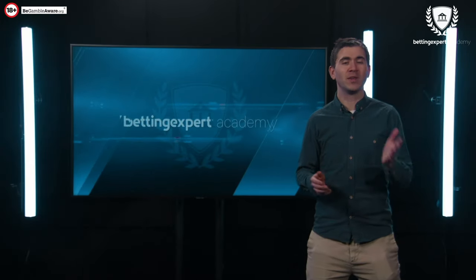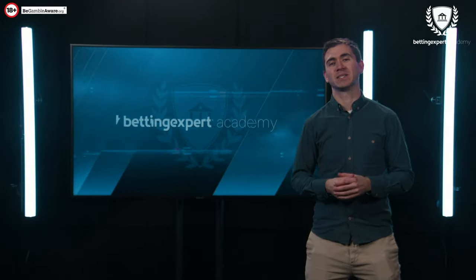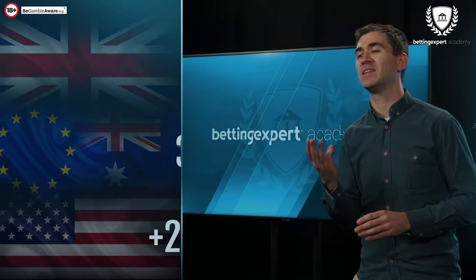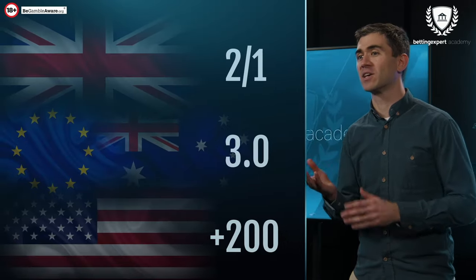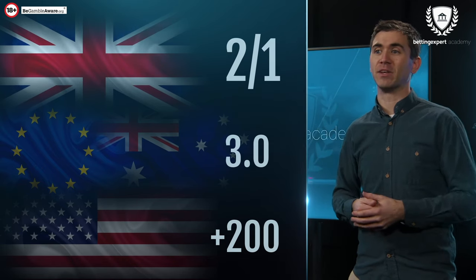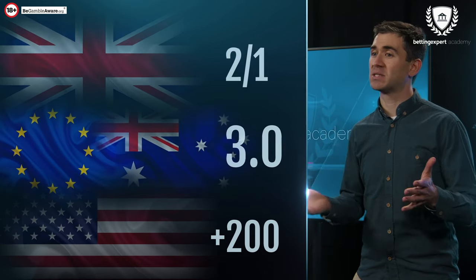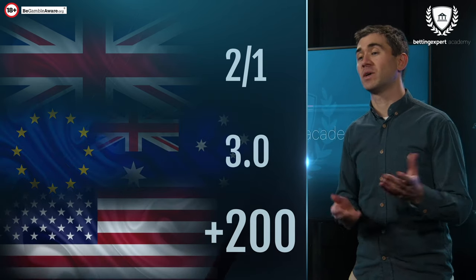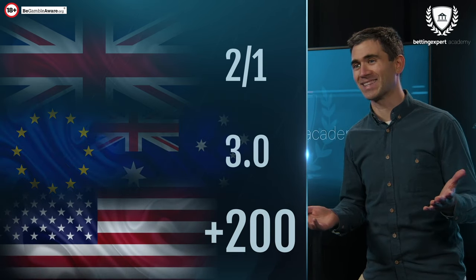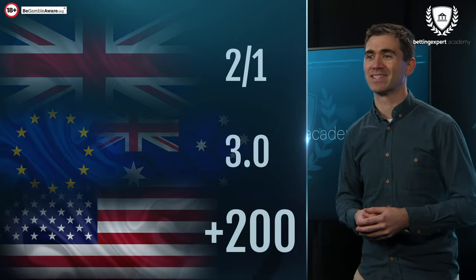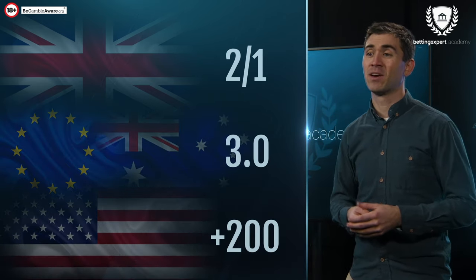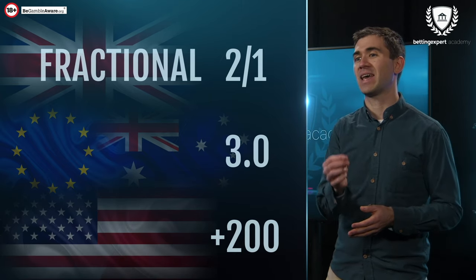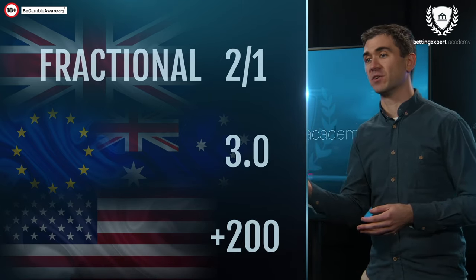To start off with, when you look at a betting market on a bookmaker site, you'll see betting odds in one of three different formats: fractional, which is mostly used in the UK; decimal, which is popular around Europe or Australia; and American odds, which is mainly used in the United States. Fractional odds show you an amount that you could win and the amount you need to stake to win that first amount.